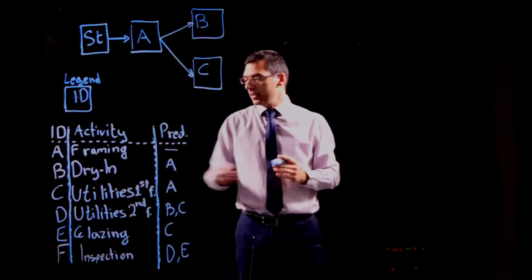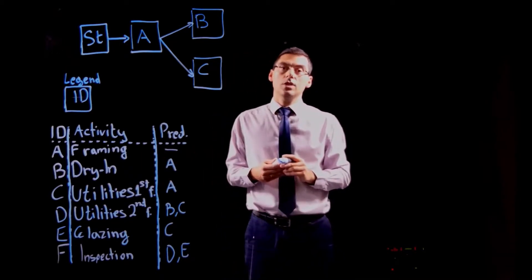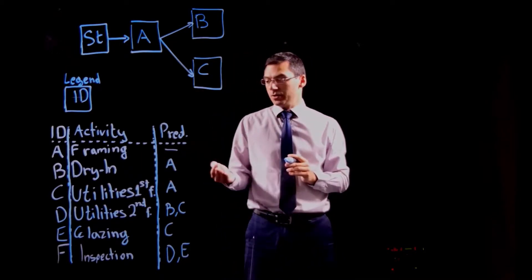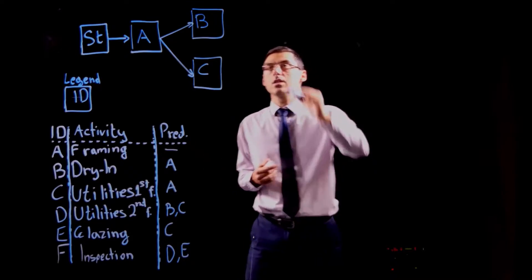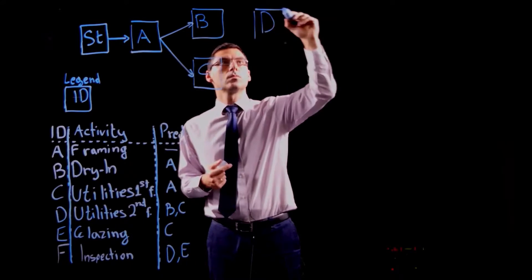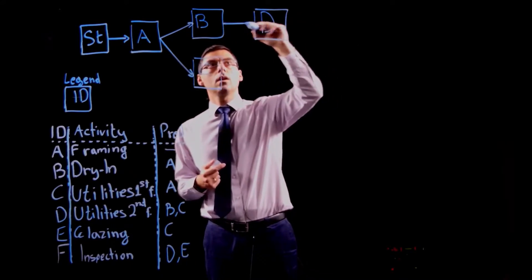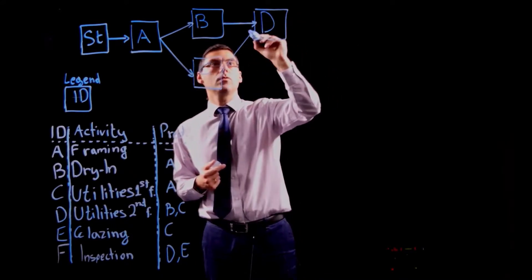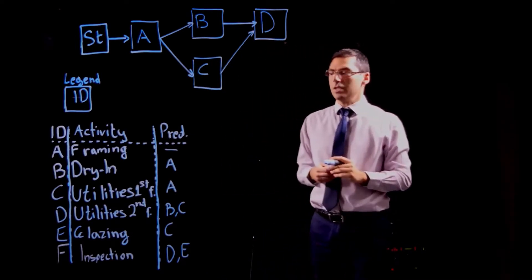The next one is activity D and as you see activity D comes after activities B and C. So I can place activity D here and I have two links that come from activity B and activity C.